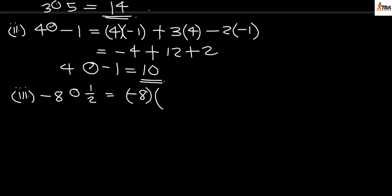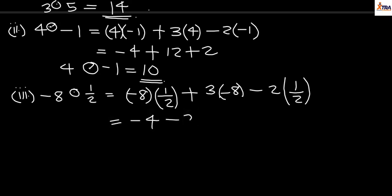I'll have -8 times 1/2 from the formula ab + 3a. My a here is -8, and then I'll have minus 2b where my b is 1/2. -8 times 1/2 gives me -4, plus 3 times -8 gives me -24, and then minus 1. -4 minus 24 is -28, minus 1 is -29. Therefore, -8○(1/2) gives me a value of -29.